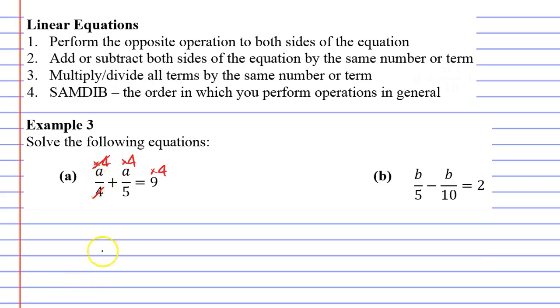You'll see when I write below that's going to become a. Now a over 5 times 4 is 4a over 5. Next, 9 times 4 is 36.